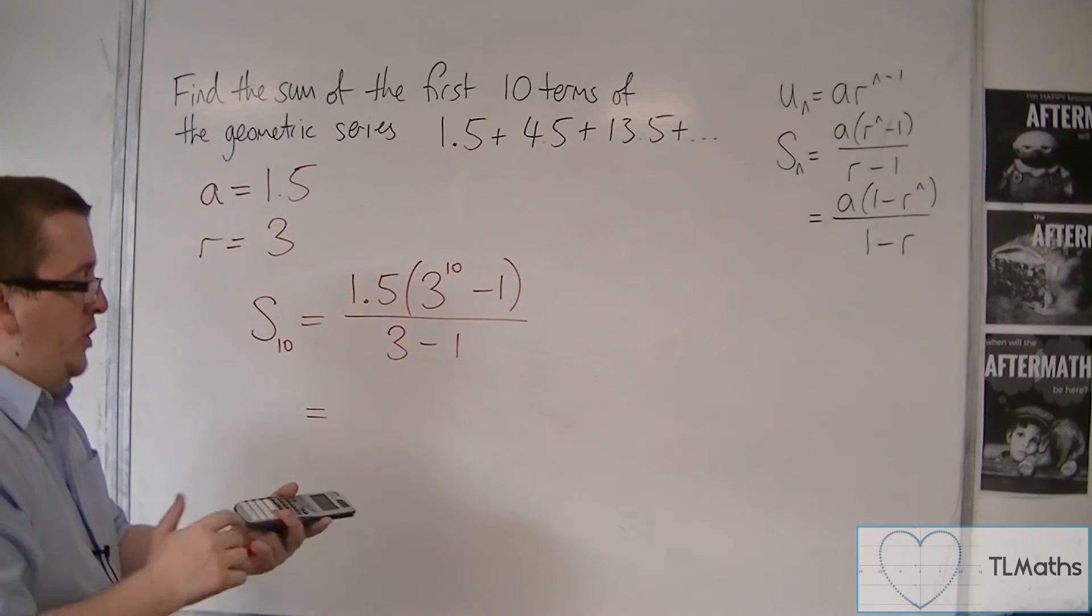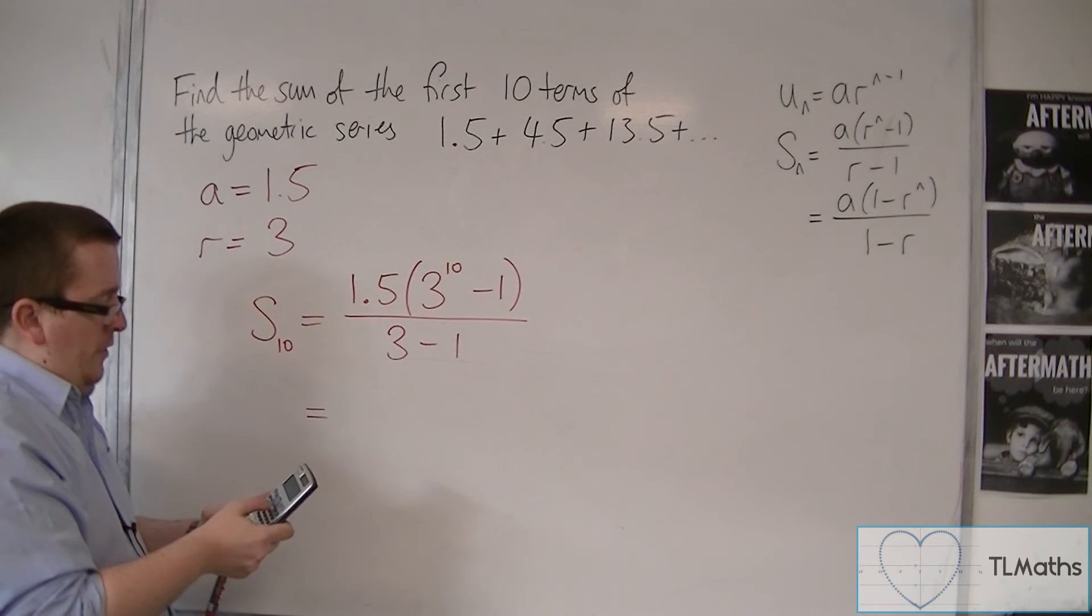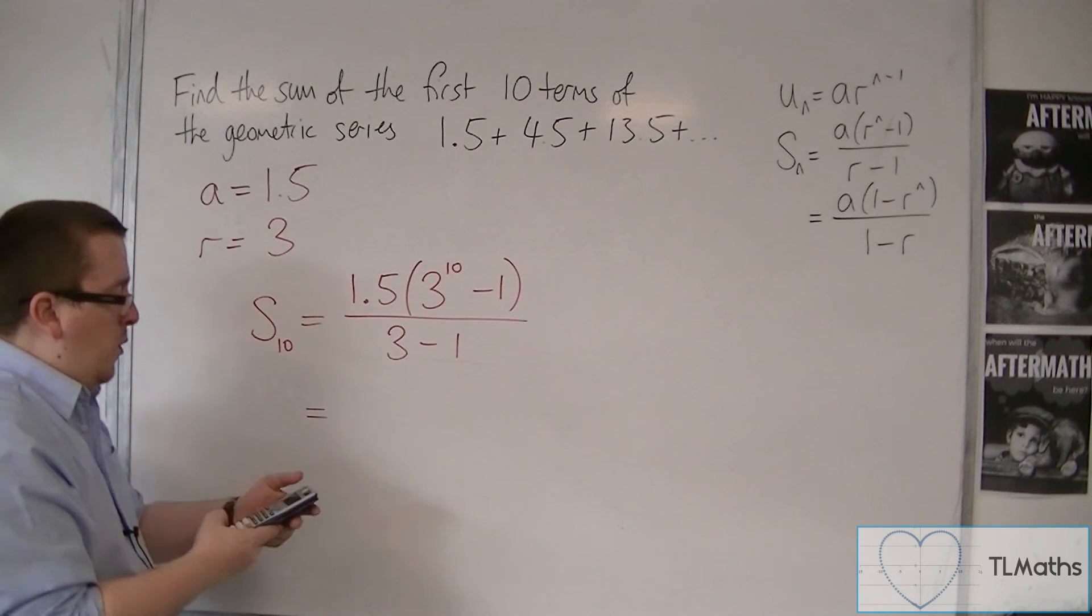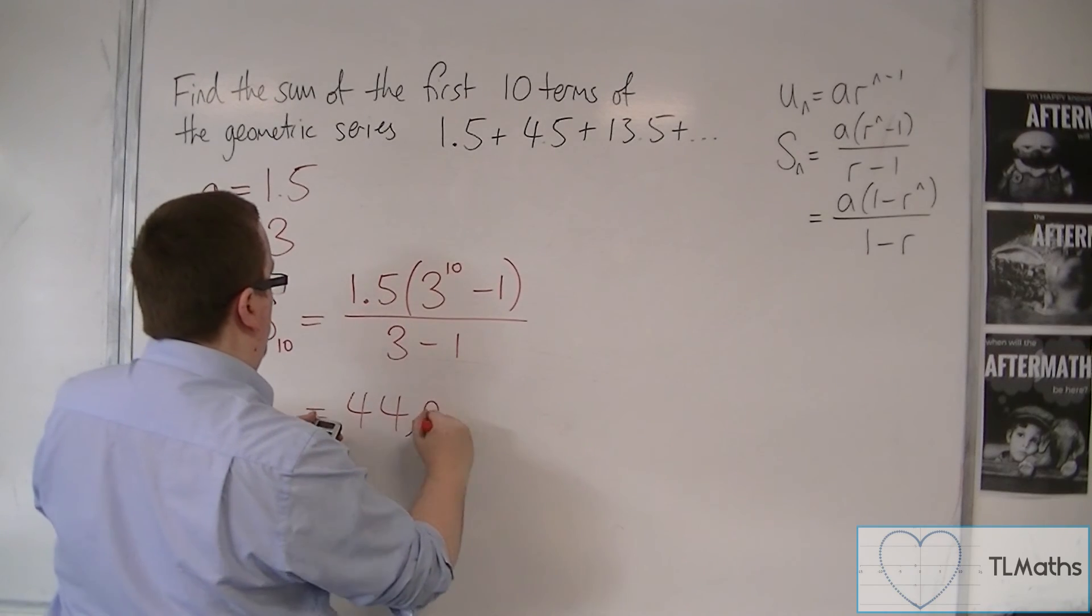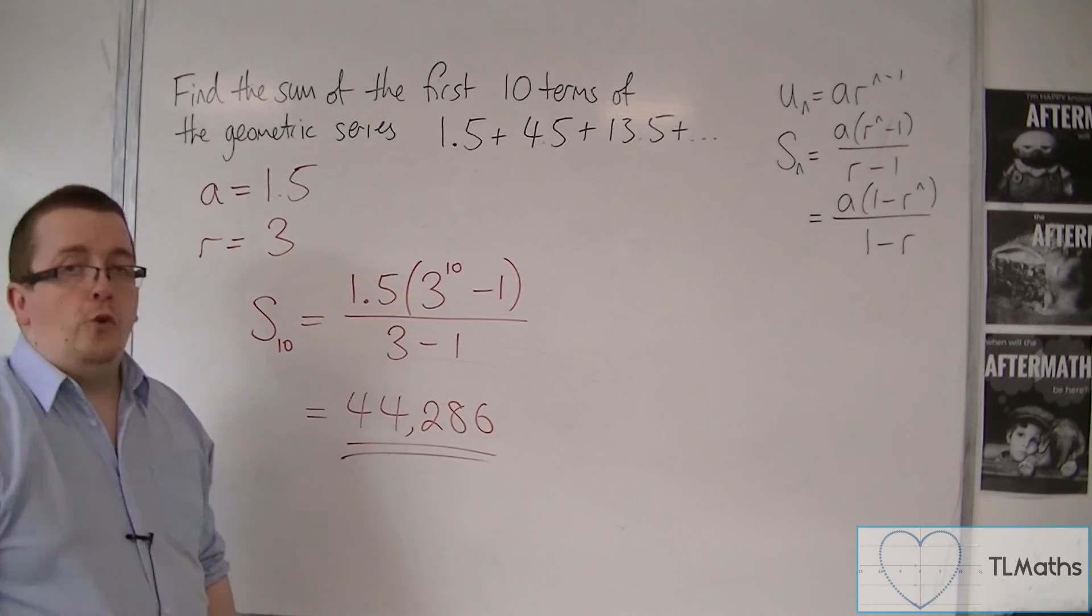So that's just substituting into the formula. Pop it into your calculator: 1.5 times 3 to the power of 10, take away 1, divided by 3 take away 1, and that gets you 44,286. That's how we can use this formula.